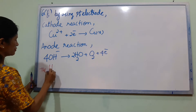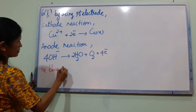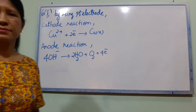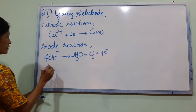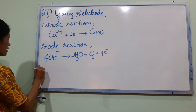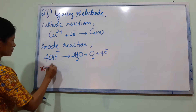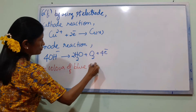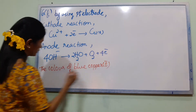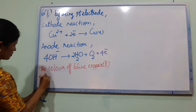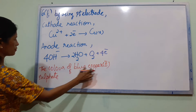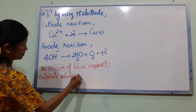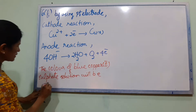The color of the blue copper sulfate solution — using platinum electrodes, the blue color will disappear as copper is deposited and hydroxide ions are oxidized at the anode.